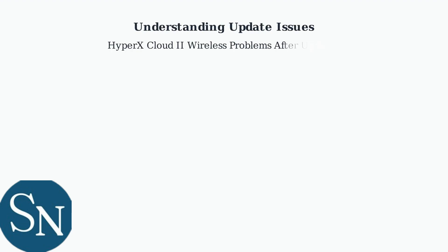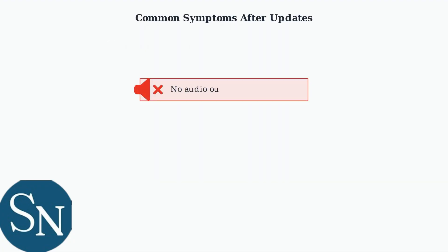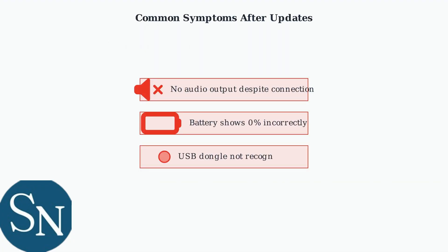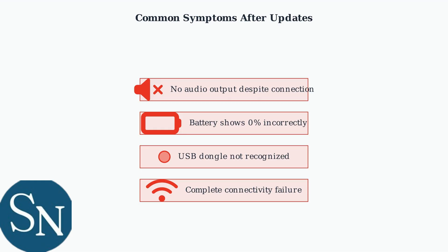Update issues with HyperX Cloud2 wireless headsets are extremely common, typically occurring after firmware updates through HyperX Ingenuity software or Windows system updates. These updates can cause several distinct problems: no audio output even though the headset appears connected, incorrect battery readings showing 0%, USB dongle recognition failures, or complete connectivity breakdown.